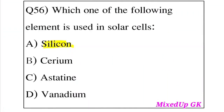Question 56: Which one of the following elements is used in solar cells? Option A: Silicon. Option B: Cerium. Option C: Selenium. Option D: Vanadium. The answer is Option A, Silicon. Silicon is used in solar cells.